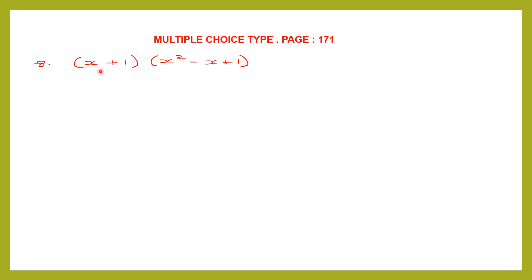Here we have multiplication of a binomial with a trinomial. We'll write down the question first. So x plus 1, we're going to multiply this with x squared minus x plus 1.